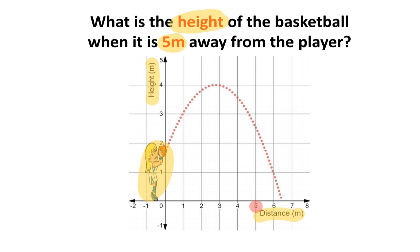5 meters is right over here, which means when the ball is 5 meters away from the player, it will have a height of approximately 2.5 meters.